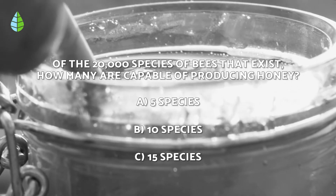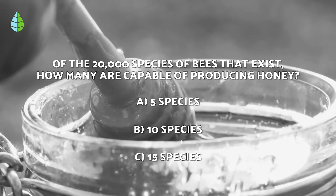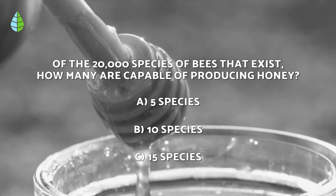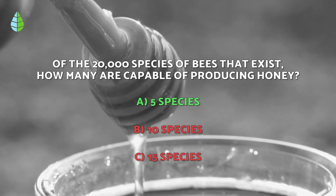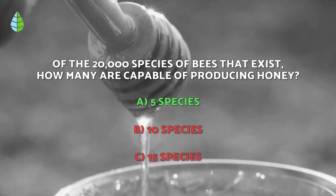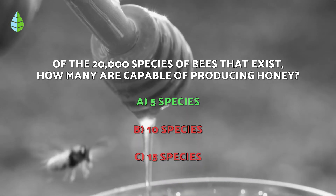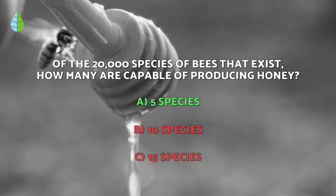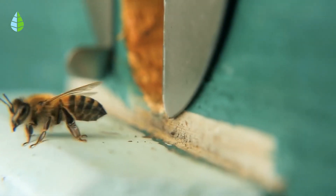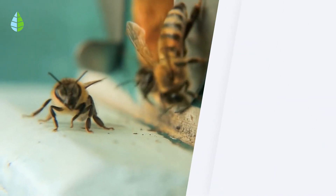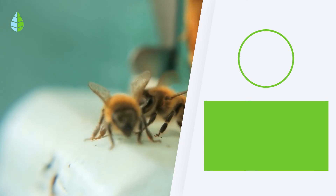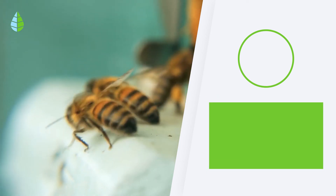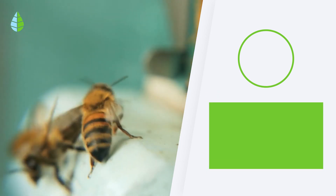And going back to the question we asked you before, the correct answer is A. Of the 20,000 species of bees that exist, only 5 are capable of producing honey. Tell us, did you know that bees go through all of these stages? Until next time!